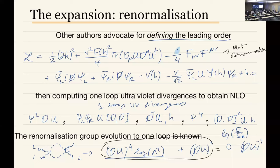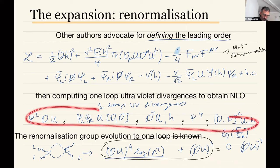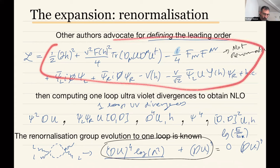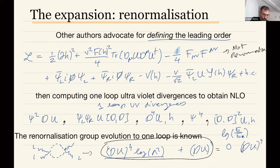If you want to include more operators you go to higher loop orders. Exactly: the way they describe it, expanding to next-to-leading order means finding what operators these leading-order operators produce at one loop, coupled with what operators this leading-order Lagrangian produces at two loops. Together that gives you the NLO Lagrangian. This procedure can be iterated to however many loops you want — that is the organizing principle they propose in this setup.